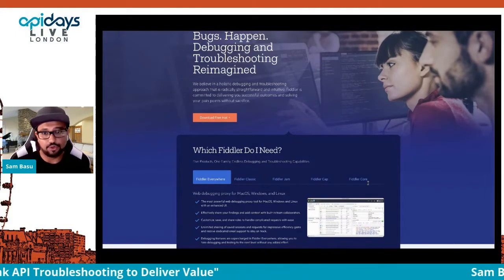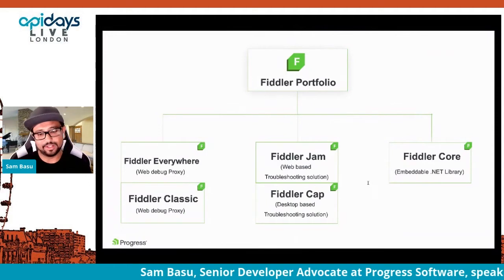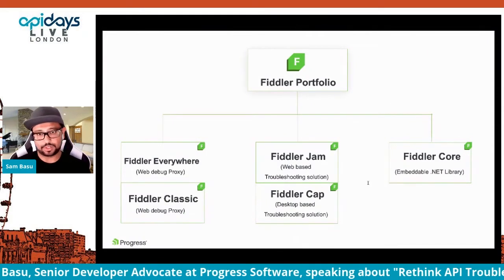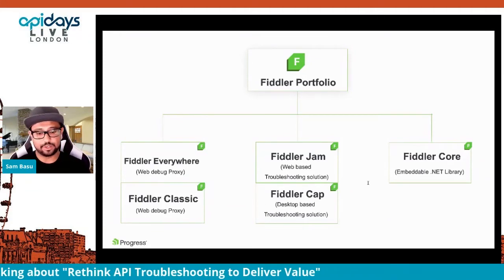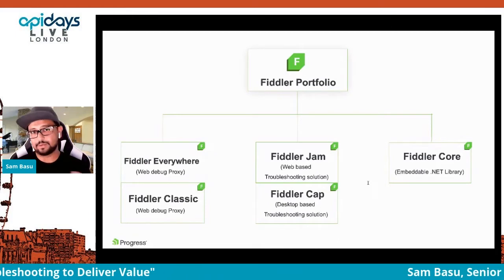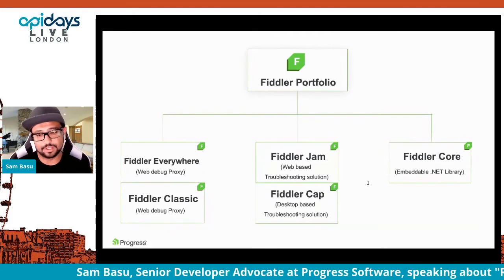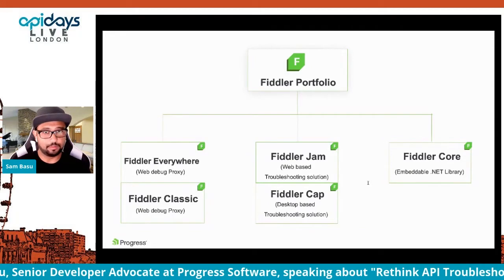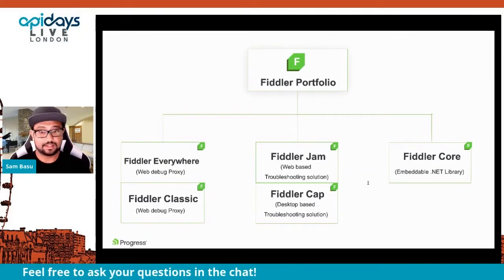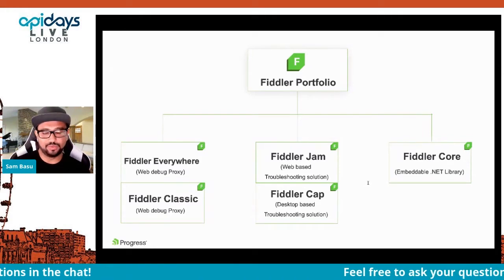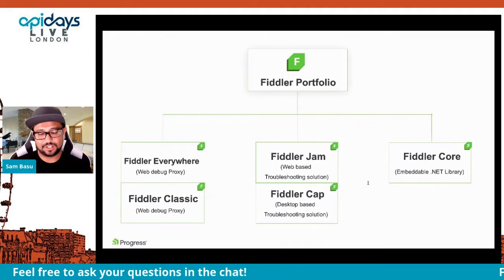Here's the Fiddler portfolio. Everything started with Fiddler Classic — a Windows-based network proxy where everything on your computer flows through it, which is a big advantage over browser-only tools. It was starting to age, so we rebuilt it from scratch as Fiddler Everywhere, which works on Windows, Mac, and Linux — yes, including Linux as your desktop.